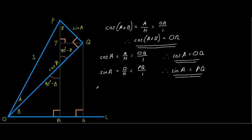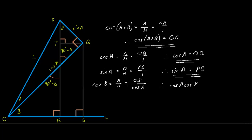Let's move on to the next step and figure out what cos B is. So we'll put adjacent over hypotenuse here. We are going to use triangle OQS to get this answer. The adjacent of OQS is OS, and the hypotenuse of OQS is cos A. If we multiply this fraction by cos A, we must do the same to cos B. Therefore, cos A multiplied by cos B equals OS.